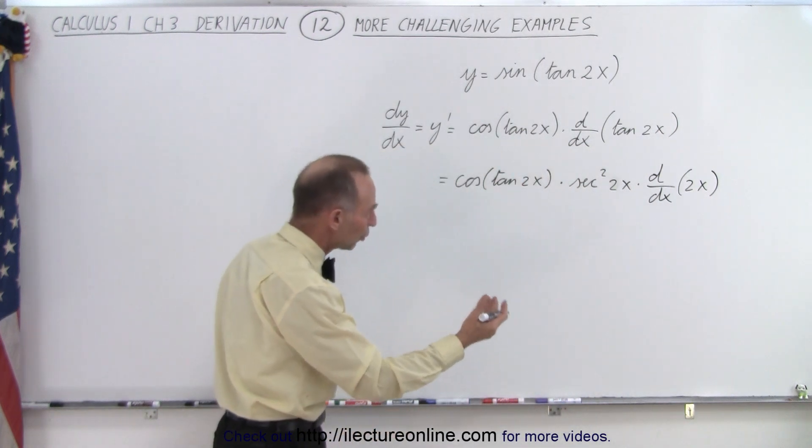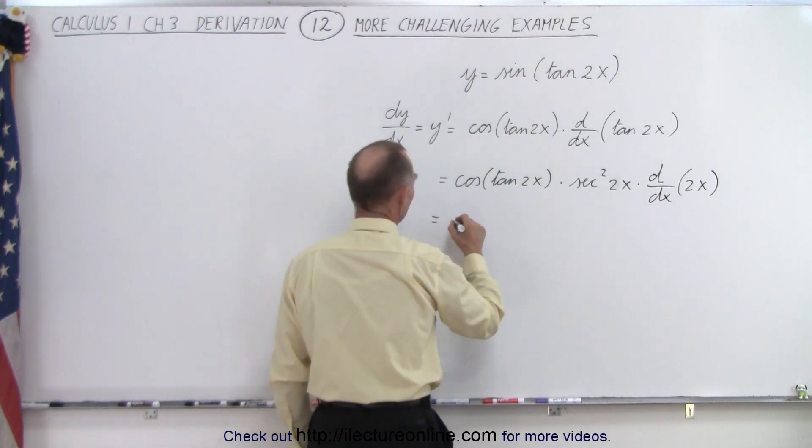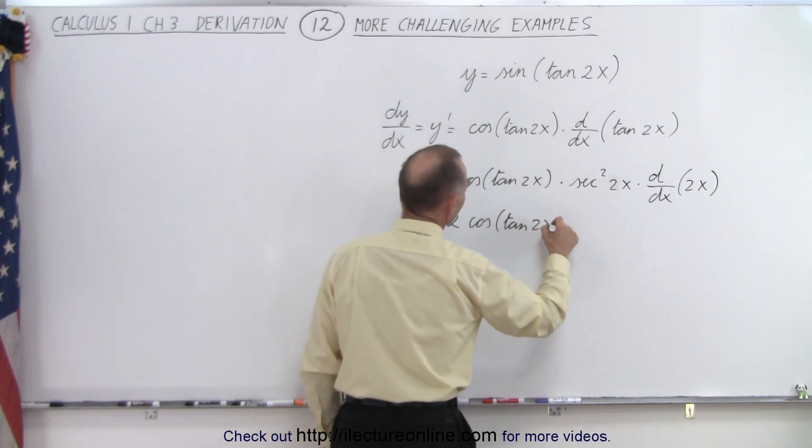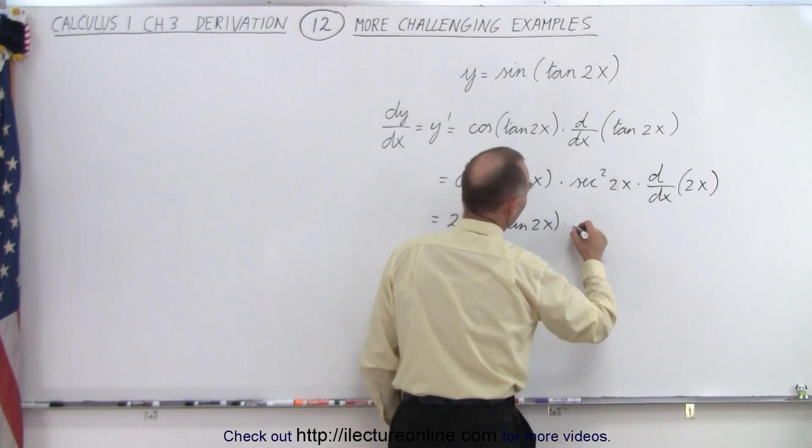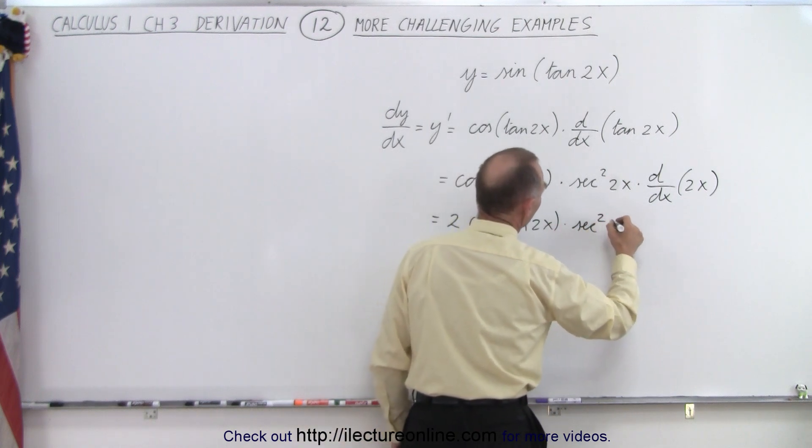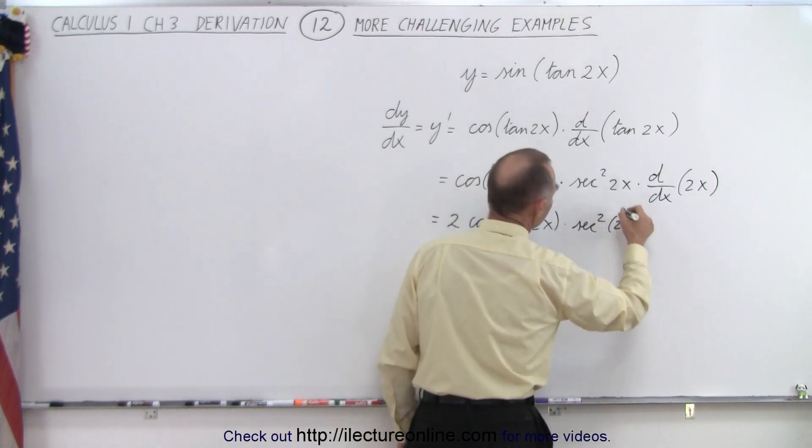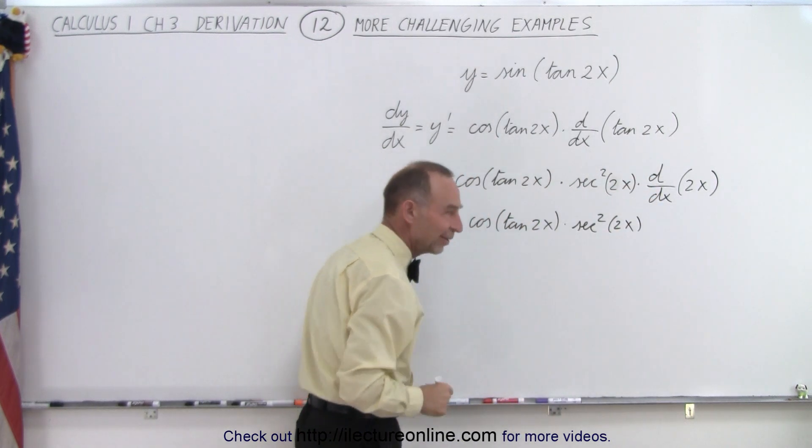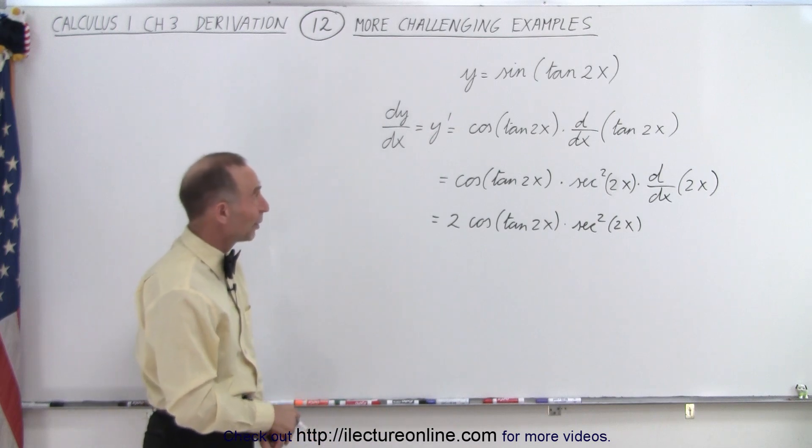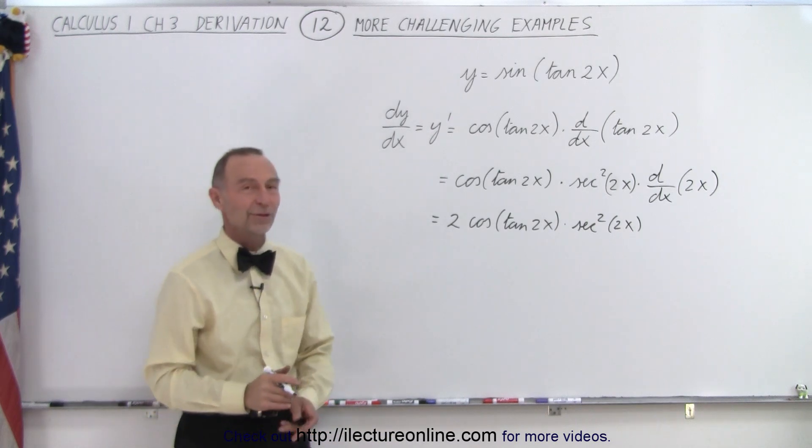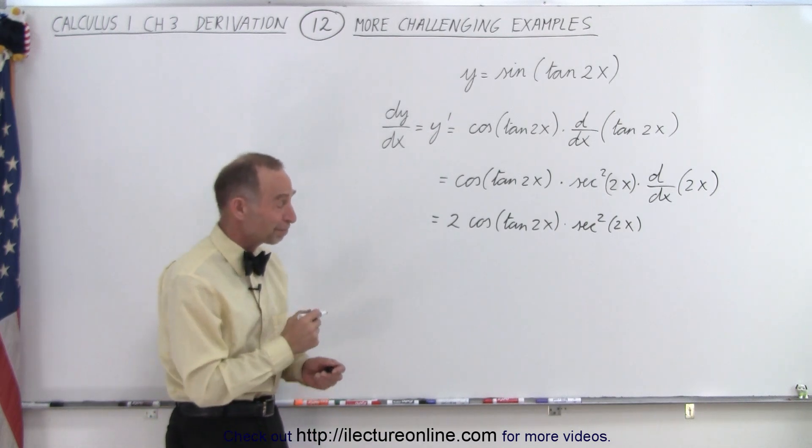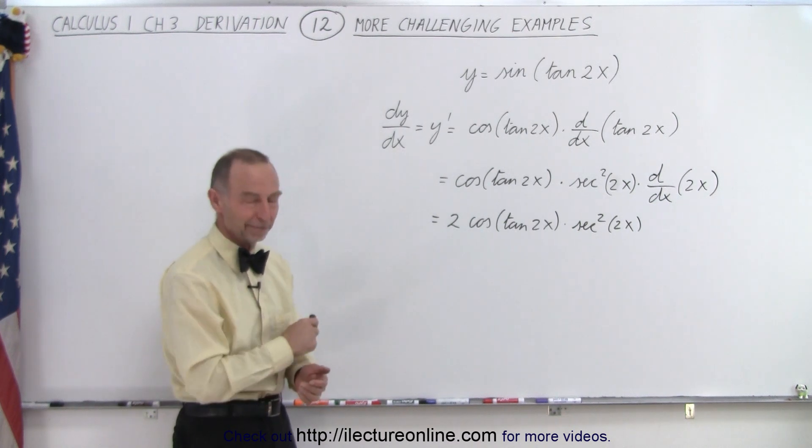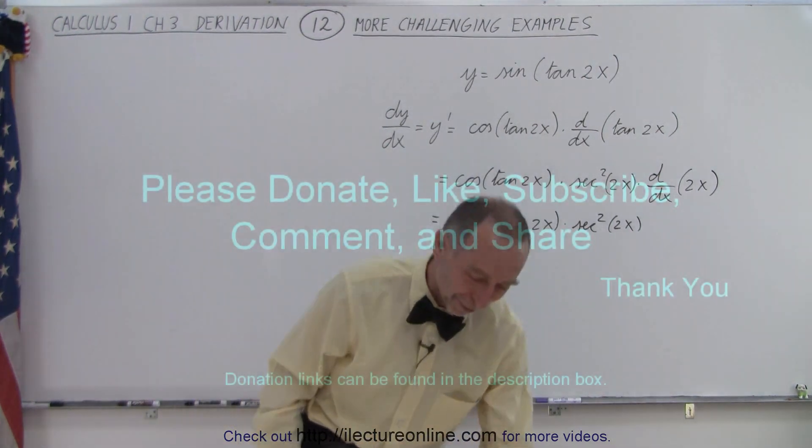And of course, the derivative of that is 2, so this equals 2 times the cosine of the tangent of 2x, times the secant squared of 2x. It's probably better to put parentheses around that. And that is the correct answer for our original problem, y equals the sine of the tangent of 2x. And that is how it's done. Correctly again, this time. You hope.